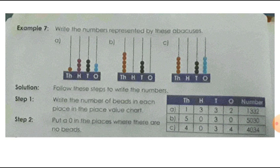Now look at the third abacus. In the thousands place there are 4 beads, in the hundreds spike there is nothing so that is zero, in the tens spike there are 3 beads, and in the ones spike there are 4 beads. So the number is 4034 — four thousand, thirty-four.